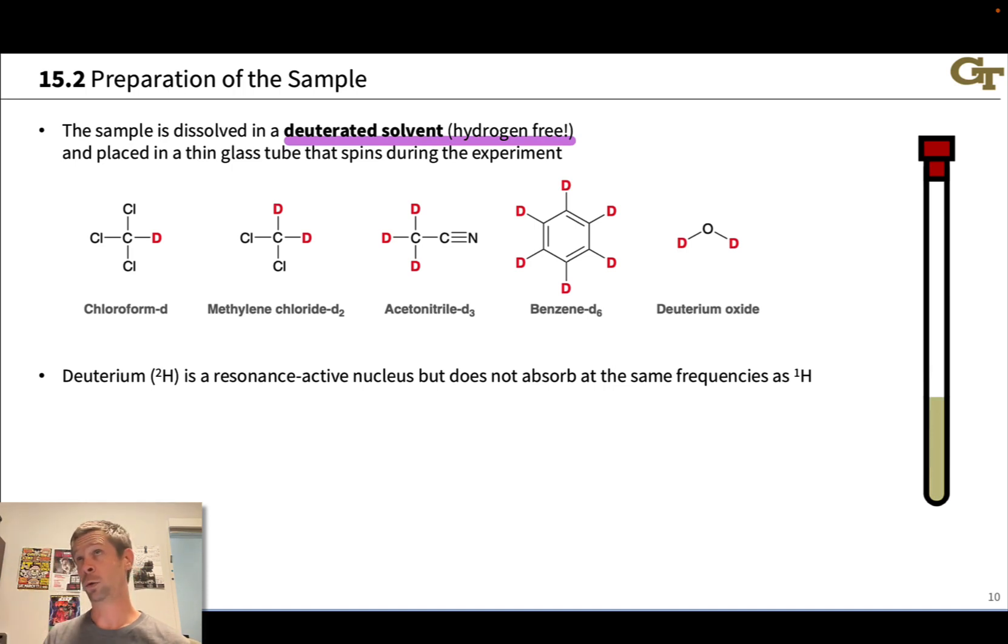Deuterium, which is the isotope of hydrogen with a mass number of 2, while deuterium is an NMR active nucleus, it resonates at frequencies that are very different from just the proton. And so we can use deuterated solvents without issue in proton NMR experiments. Some of the more common ones are shown on this slide. Chloroform D has one deuterium where the H would be in chloroform. Methylene chloride D₂, two deuteriums. Acetonitrile D₃, deuteriums where the CH₃ group would appear in acetonitrile itself.